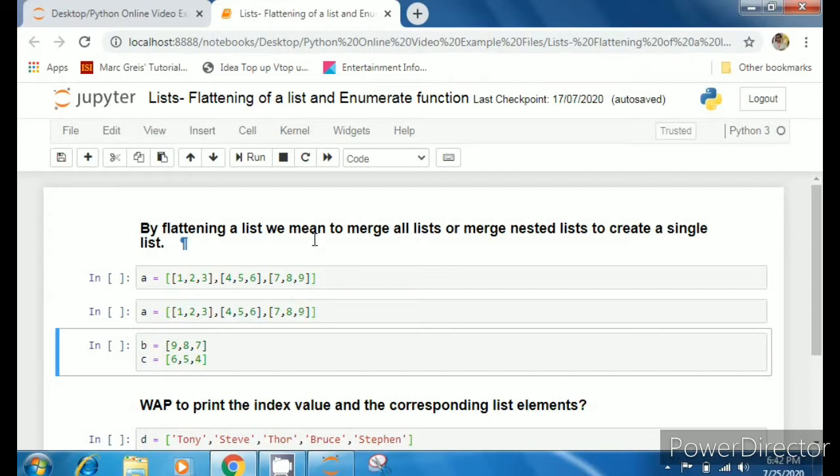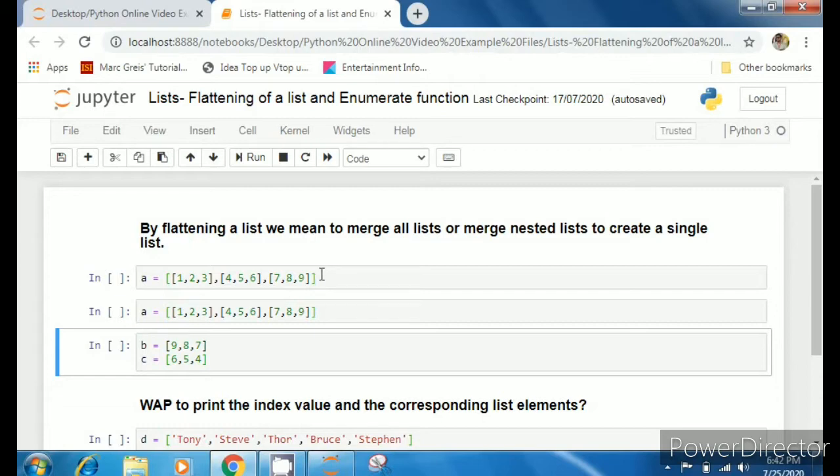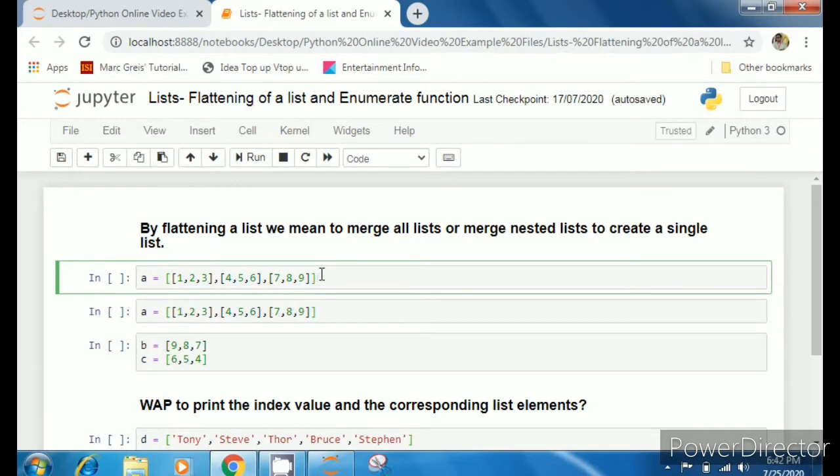By flattening a nested list we mean that we want to remove that nested parts and create a single list by merging all the elements. Here I have got a nested list - there are three lists within a list.